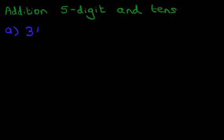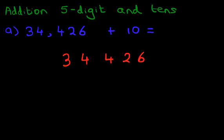What is 34,426 plus 10? Now I'm sure most of you can do this just by the horizontal format, but we're going to do this using the vertical format. So the first stage is to rewrite this question into columns. 34,426 plus 10.